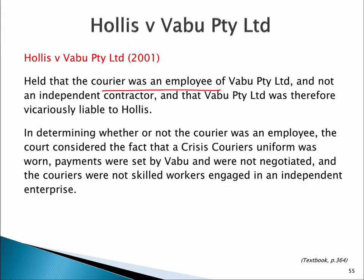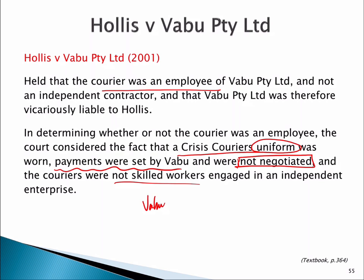What kinds of things does the court look for? They look for control. The bicycle courier had to wear a uniform indicating they worked for Crisis Couriers, and payments were set by Vaboo and not negotiated — which looks far more like an employment and control situation than a contractor arrangement. The couriers also weren't skilled workers. Several factors established that Vaboo had sufficient control in the relationship to classify it as an employer-employee relationship for the purposes of vicarious liability, making Vaboo liable for the harm caused by the couriers.